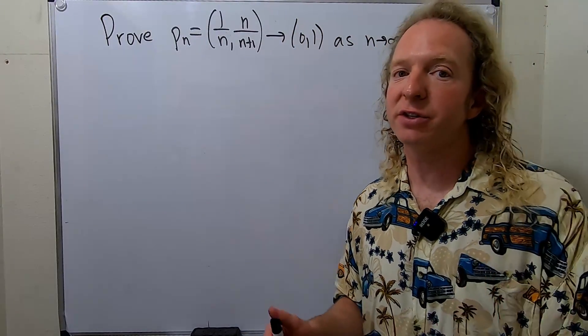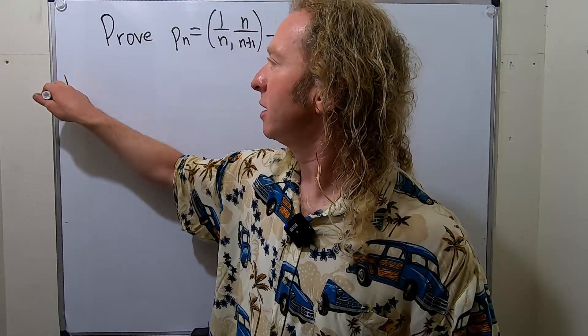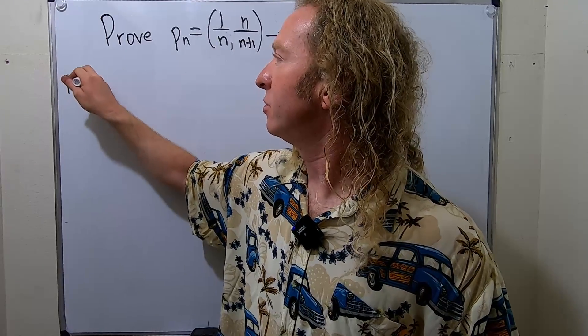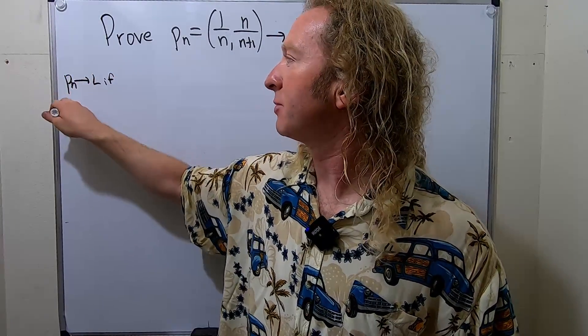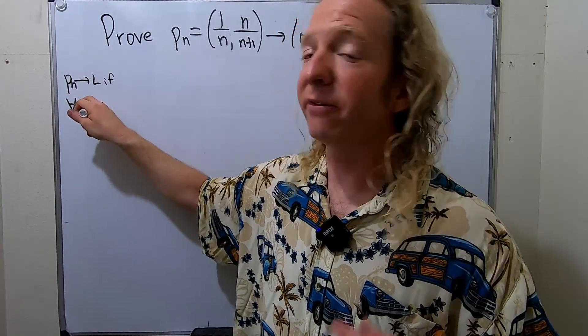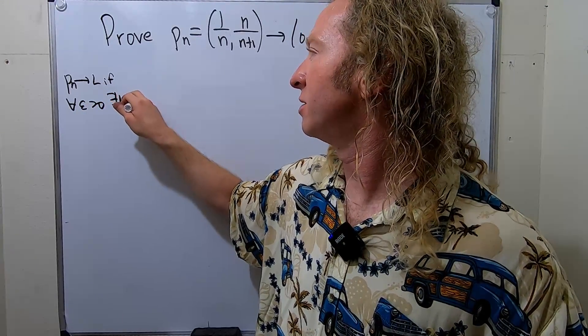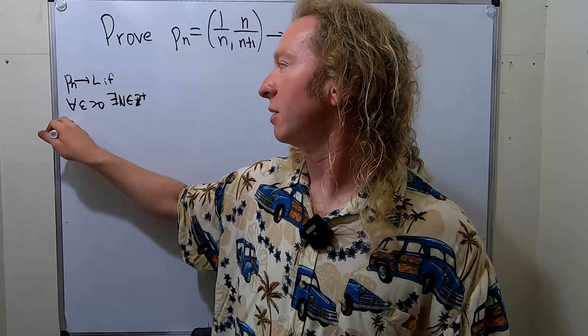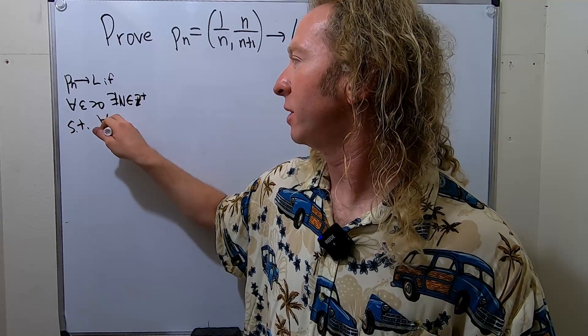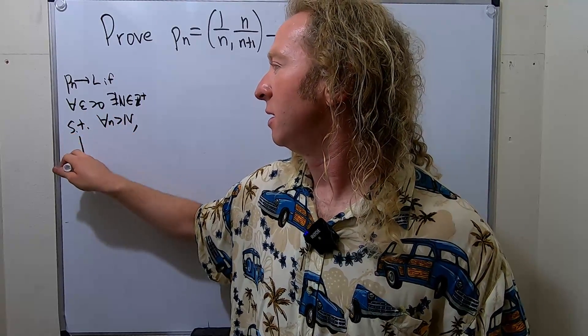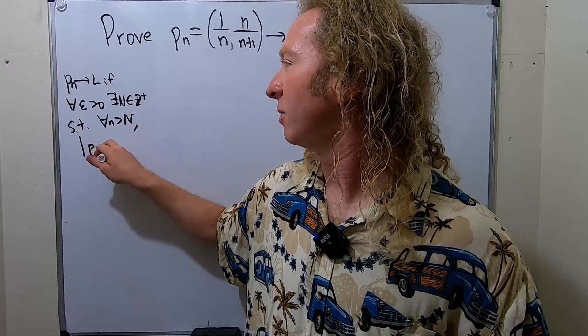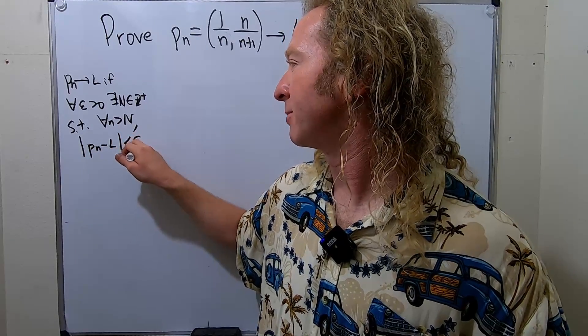Let me recall the definition of convergence. We say that P_n converges to L if for all epsilon greater than 0, we can find some positive integer, there exists an N in the set of positive integers such that for all little n bigger than capital N...